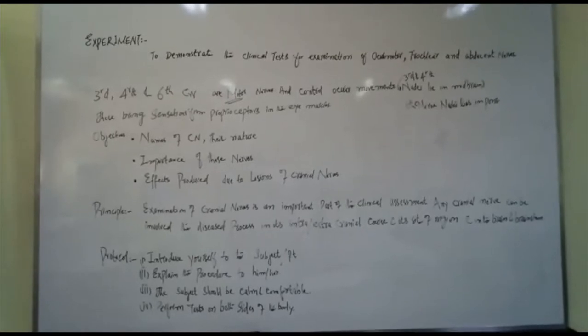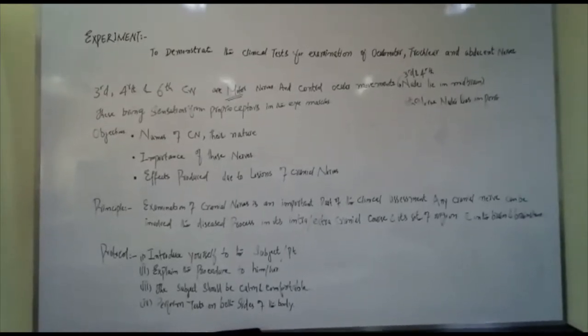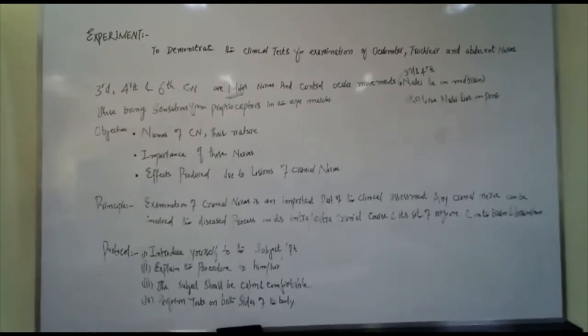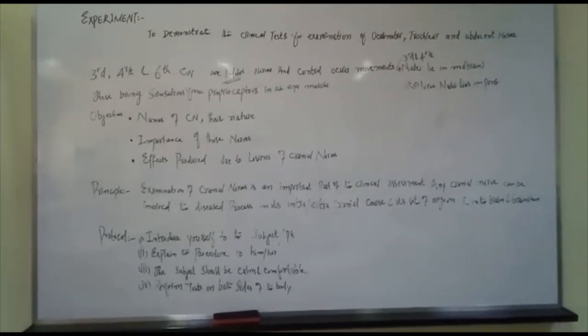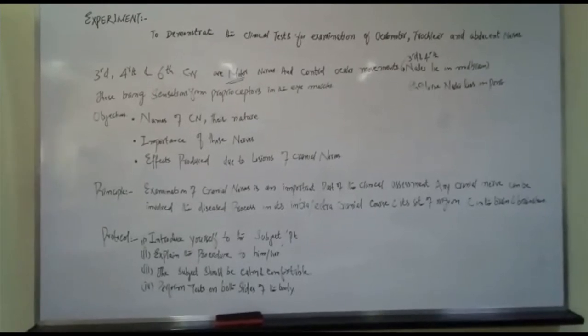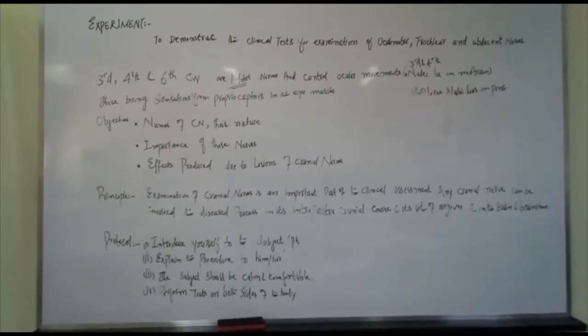3rd, 4th and 6th cranial nerves are motor nerves and control ocular movements. Their nuclei - 3rd and 4th cranial nerve nuclei lie in the midbrain and 6th cranial nerve nuclei lie in pons.